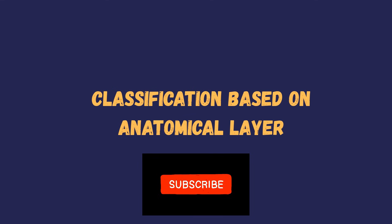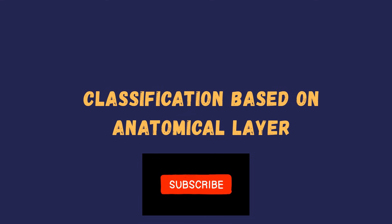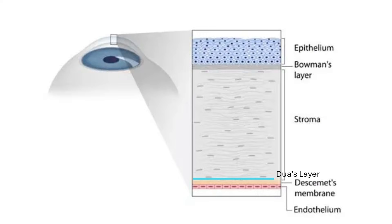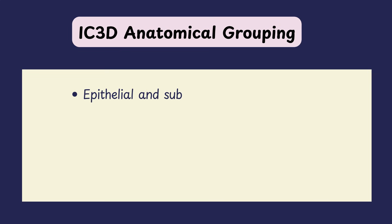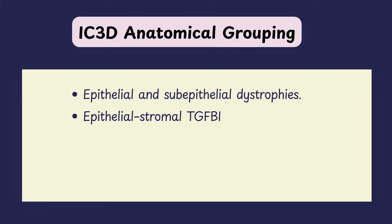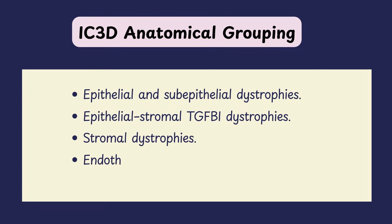Now let's shift to the anatomical classification. The cornea has six layers: epithelium, Bowman's layer, stroma, pre-Descemet's layer, Descemet's membrane, and the endothelium. The IC3D anatomical classification groups dystrophies by which layer is primarily affected, giving us: epithelial and subepithelial dystrophies; epithelial stromal TGF-β1 dystrophies (previously known as Bowman's layer dystrophies); stromal dystrophies; and endothelial dystrophies.